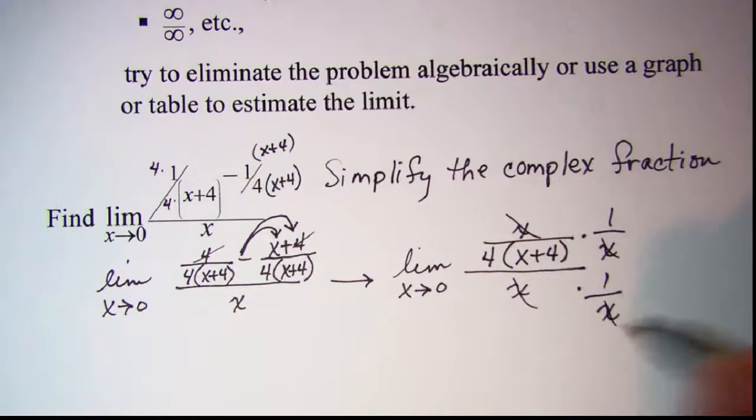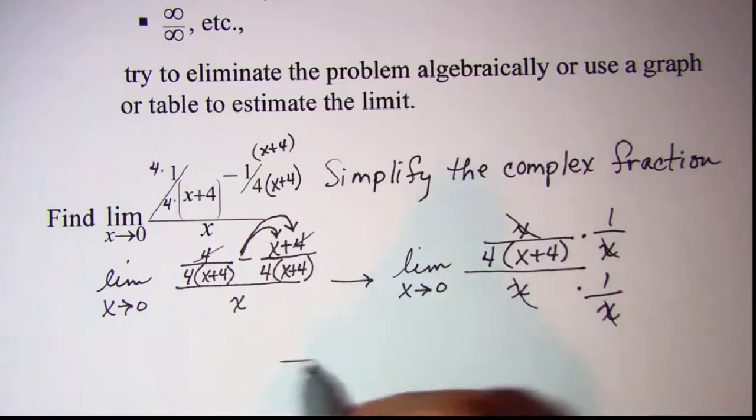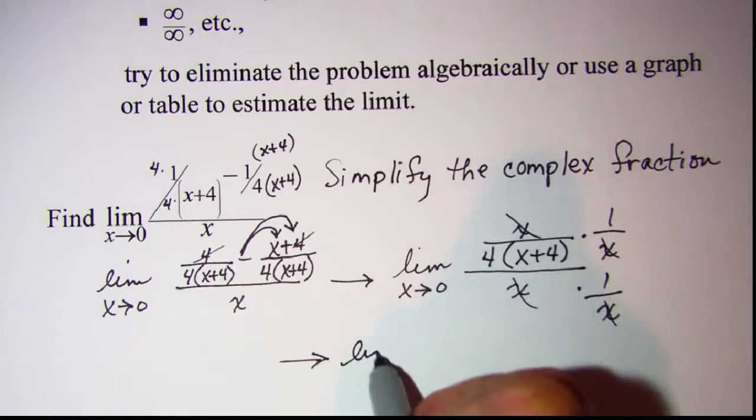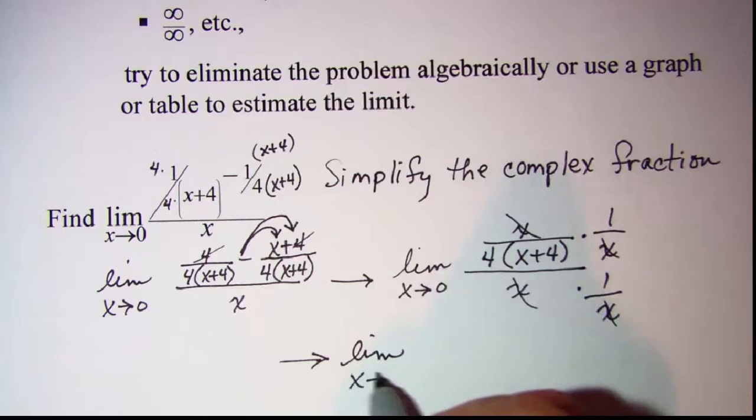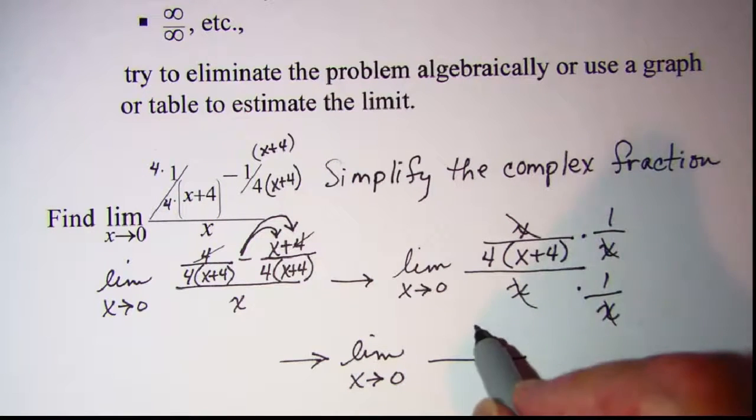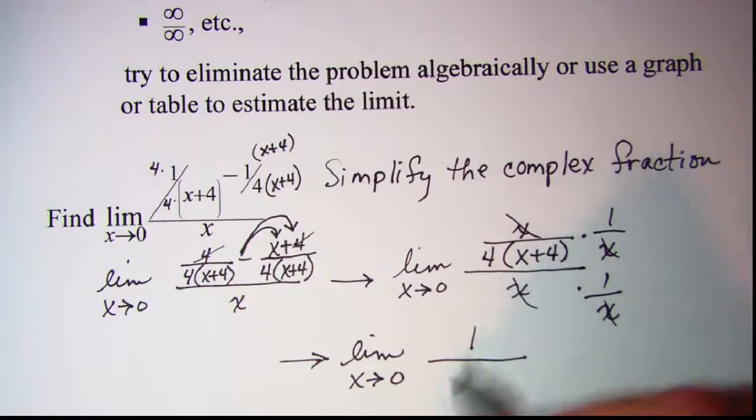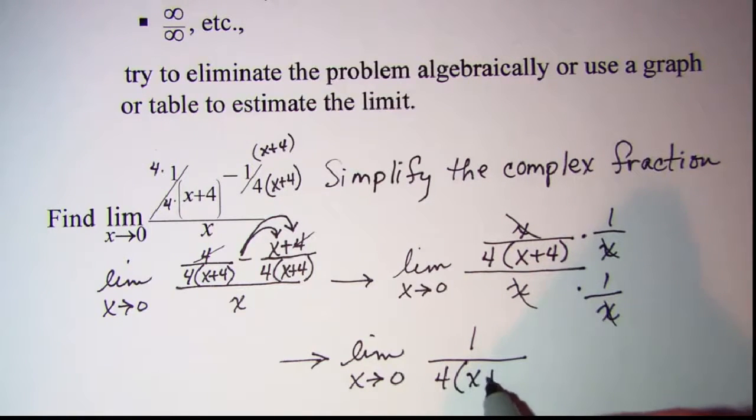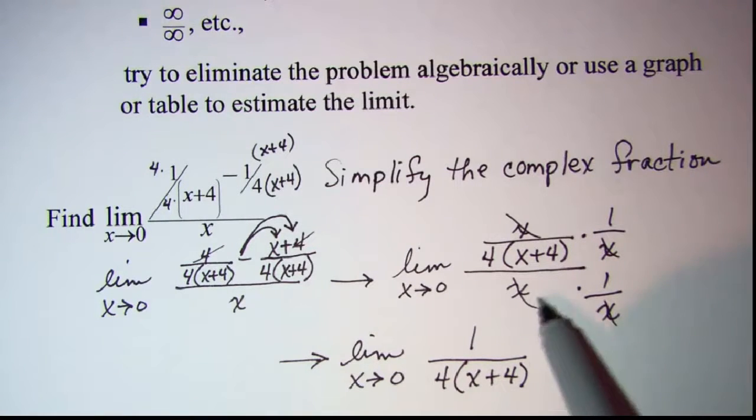And I'm actually now just working with the limit as x approaches 0 of 1 in the numerator, and then 4 times the quantity (x + 4). And in the bottom down here, I have just 1, so I don't have to write it in.